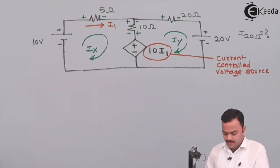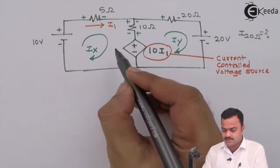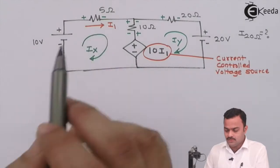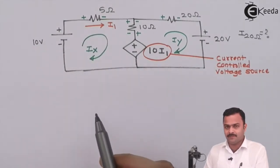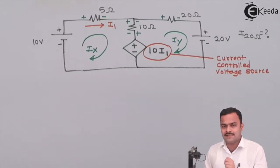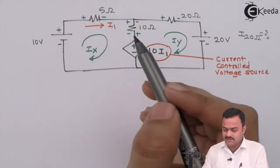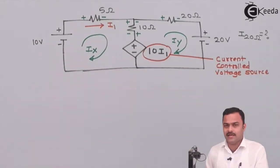So now over here ix and iy are the variables which we have introduced and i1 is their variable. So in all there are three variables but the meshes are only two. So the thing is that we need to reduce one variable and we have to always reduce variable given by them. The thing is that somewhere wherever I will find the i1, I need to replace that with ix or iy depending upon the circuit condition. So let's see how we are going to do this.